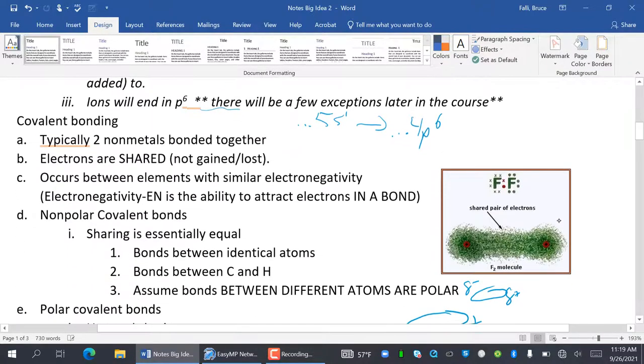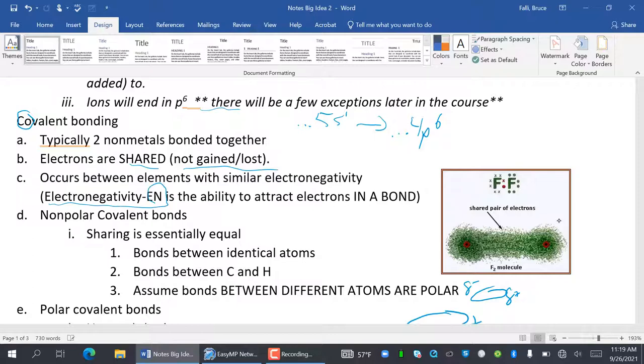Covalent bonding. Typically there are two non-metals bonded together. And covalent, the word co means share. Like communists share all of their stuff. Or if you live in a commune, you do the dishes and I'll mow the lawn. So electrons are shared. They are not gained or lost. It occurs between elements with similar electronegativity. And electronegativity is one of the trends we had to do. It's abbreviated EN. And it's the ability to attract electrons in a bond.